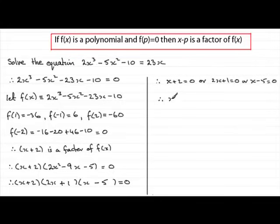And what's that going to lead to? Well, from this one, x would equal minus 2. For the other one, 2x would equal minus 1, leading to x equaling minus a half. Or in the third case here, x would equal 5.